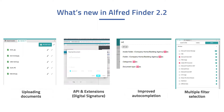We learned from our users that they would like to use Finder not only for finding documents, but also to upload them into Alfresco. This is why we added this functionality to enable you to upload your documents directly from within Finder. You can upload multiple documents at once through the upload button or by dragging and dropping your documents in place.